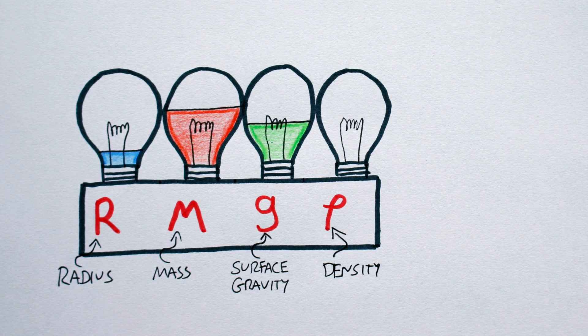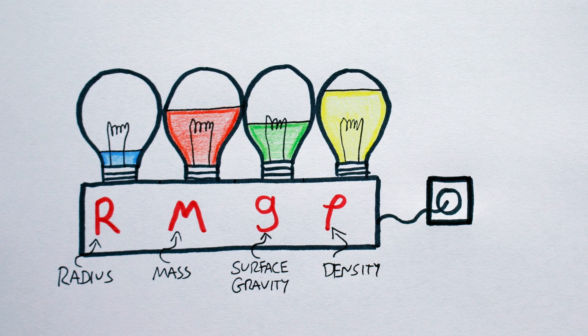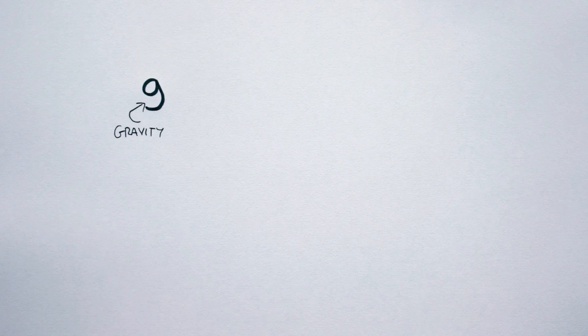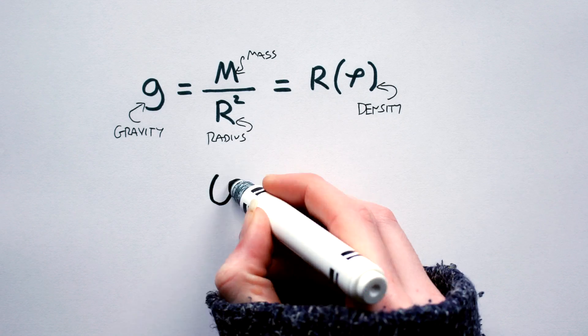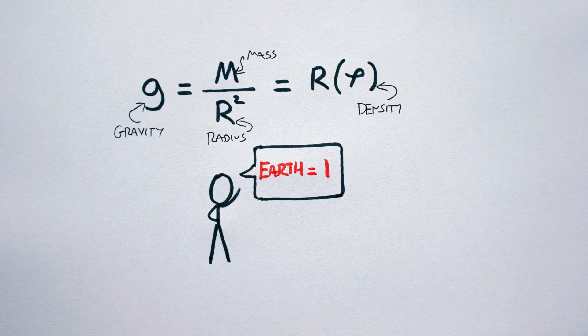To know these physical parameters is to know one's planet. Luckily, one very simple yet extremely important worldbuilding equation governs all four values. Gravity equals mass over radius squared, which equals radius times density. By the way, all values in this video, unless otherwise stated, are relative to Earth being equal to 1.